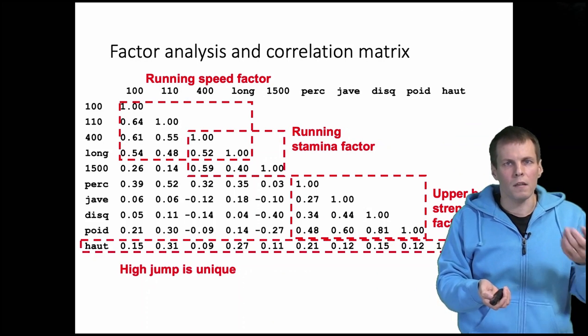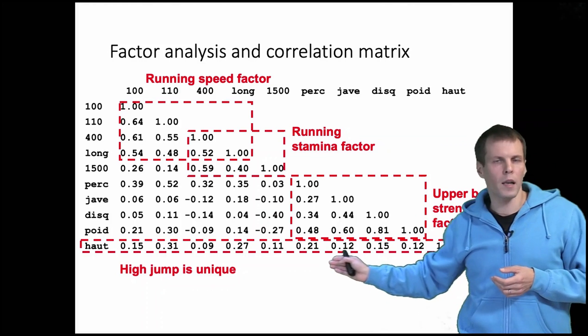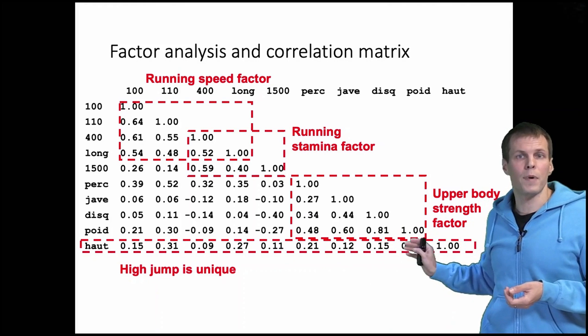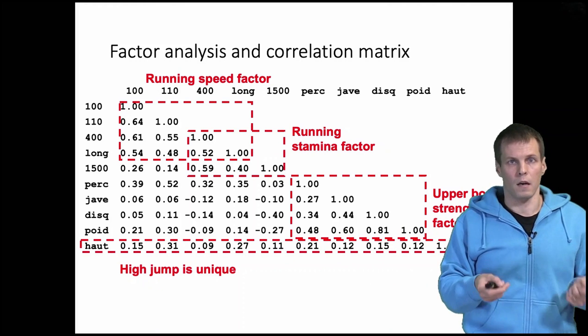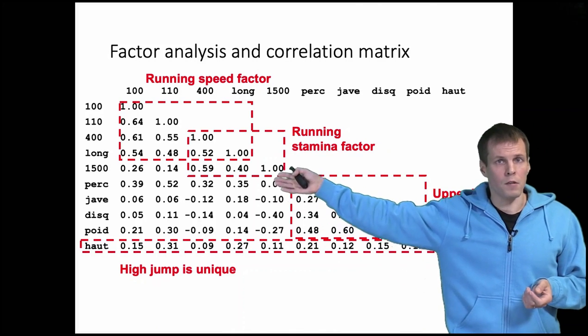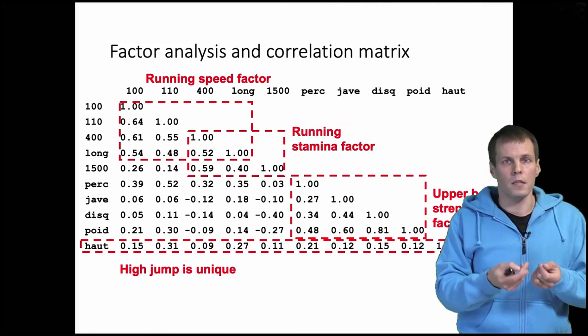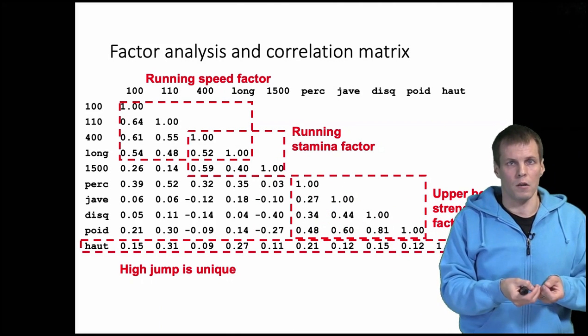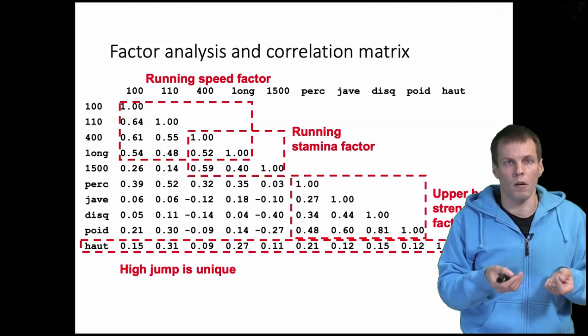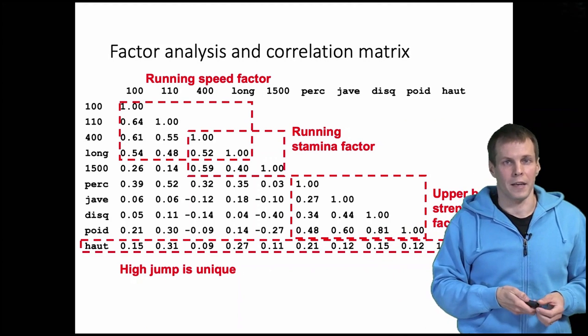We can also see that the fourth factor here, high jump, it is very unique, it's not highly correlated with any of the other sports. That is something that depends on different sets of skills than the others. Of course we could simply be interpreting this correlation matrix directly, but it's a lot easier to do it with the factor analysis using your computer because it simplifies it. You have less numbers to look at, particularly if the number of variables grows larger than 10.